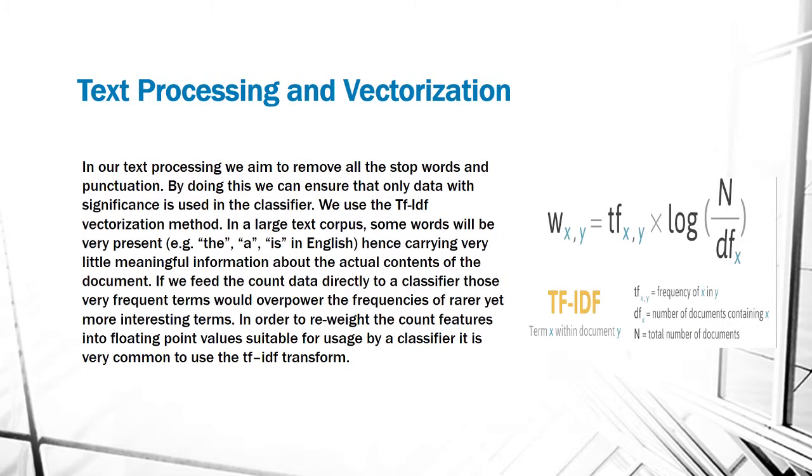Text processing vectorization: in our text processing we aim to remove all the stop words and punctuation. That way we can make our data more clean. By doing this we can ensure that only data which is significant to the classifier stays. We use the TF-IDF vectorization method. In a large text corpus, some words will be present like 'the,' 'a,' 'is,' hence carrying very little meaningful information about the actual contents of the documents. If we feed the count data directly to the classifier, those very frequent terms would overpower the frequencies of rarer yet more interesting terms. In order to reweight the count features into floating point values suitable for usage by a classifier, it is very common to use TF-IDF transform.